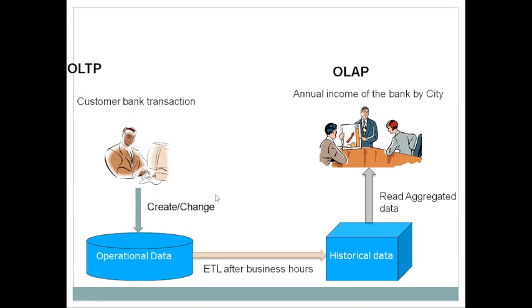Why can't we create analytical reports directly on the OLTP system? Why do we maintain two different systems? Because OLTP is only for transactions — withdrawals or deposits. Analyzing 10 to 20 years of data on OLTP would create a huge impact on the system's performance. If you try to run a select query for 10 years of data on OLTP database tables, the system performance will be severely reduced.